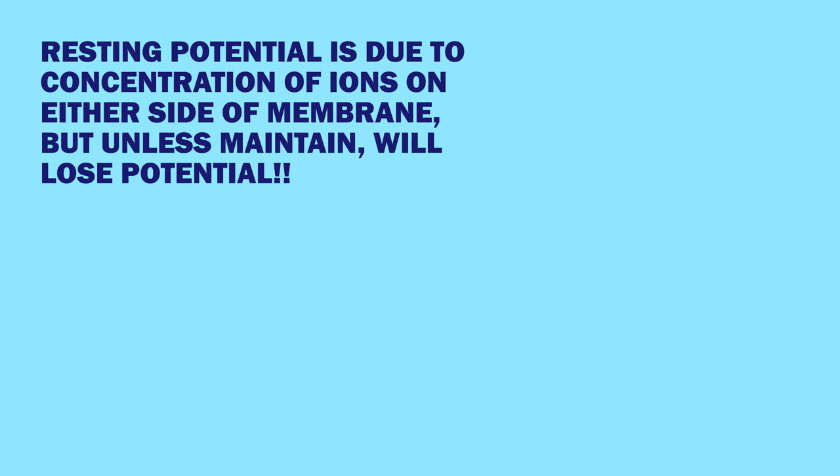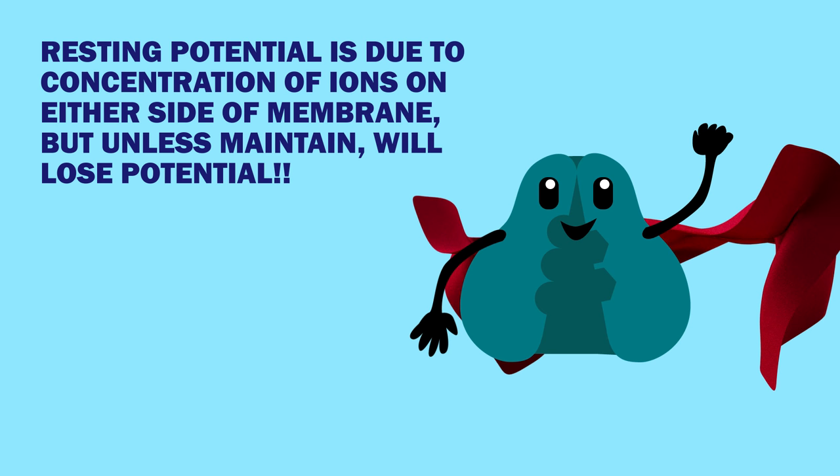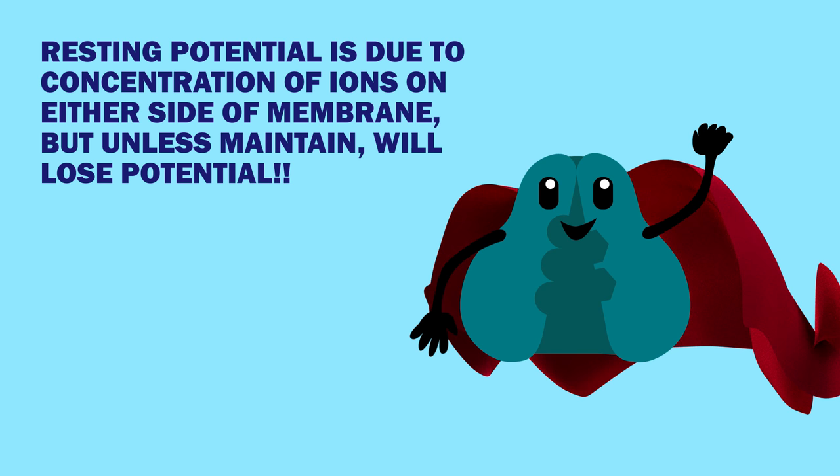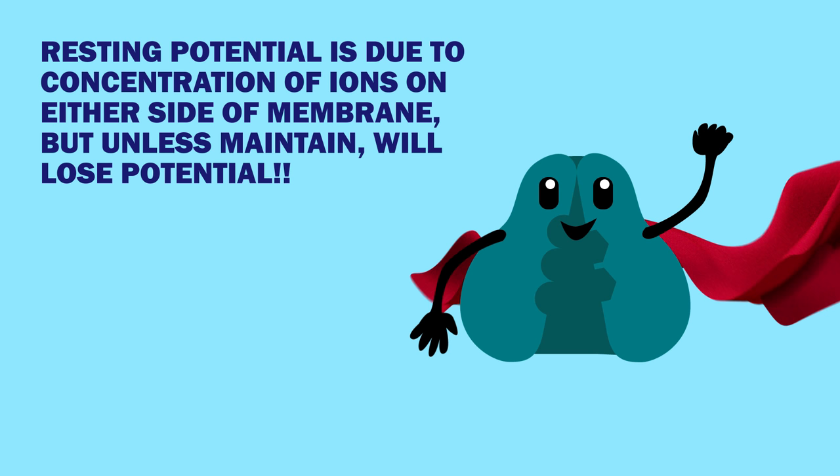Now, if you were to just let the ions do their thing and flow through these leaky channels, eventually a bunch of sodium would rush in, and we'd lose that potential. However, the sodium-potassium pump is at work. The energy from one ATP hydrolysis reaction allows this pump to transfer three sodium ions out and two potassiums in. As a result, the neuron maintains its resting potential of minus 70 millivolts.